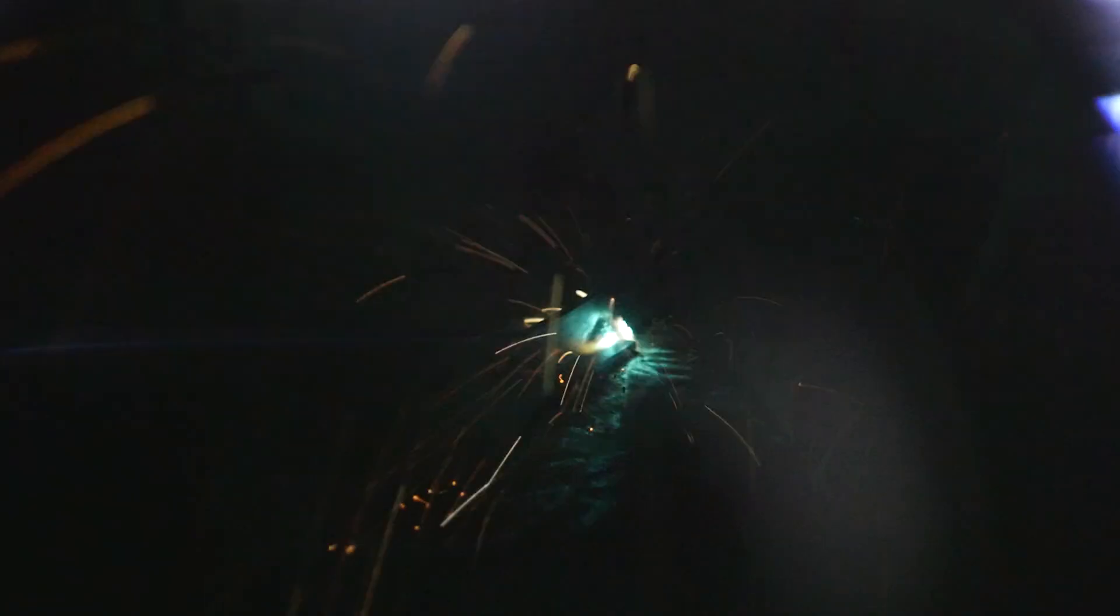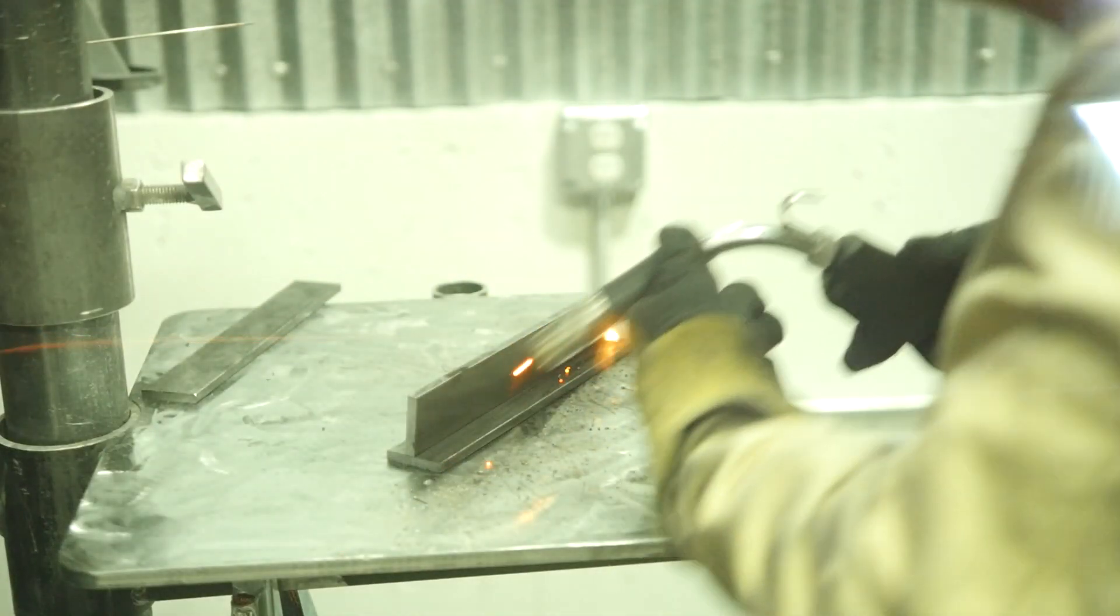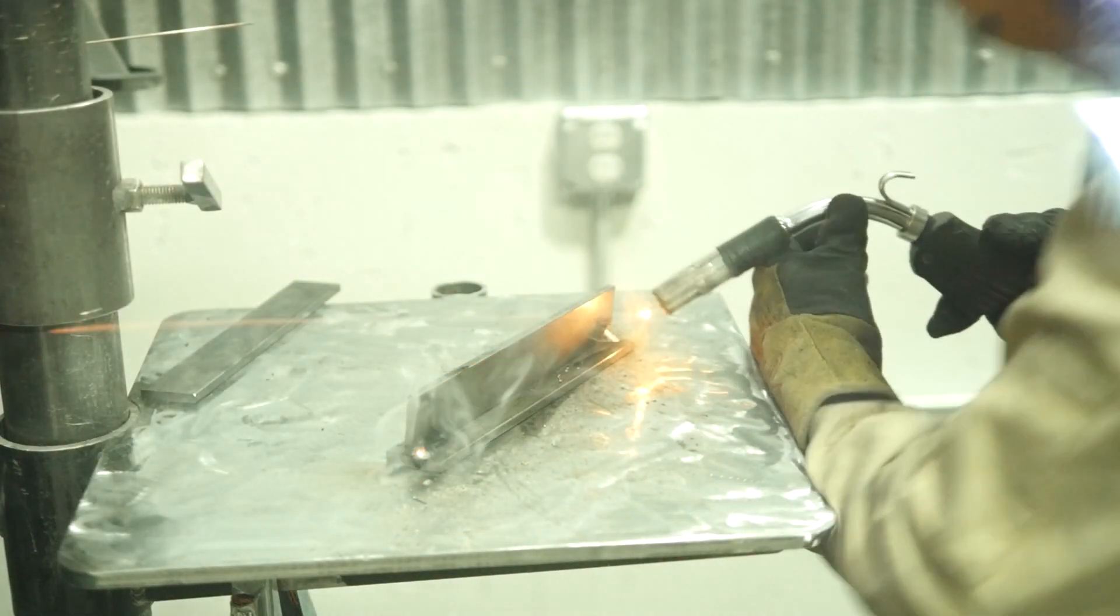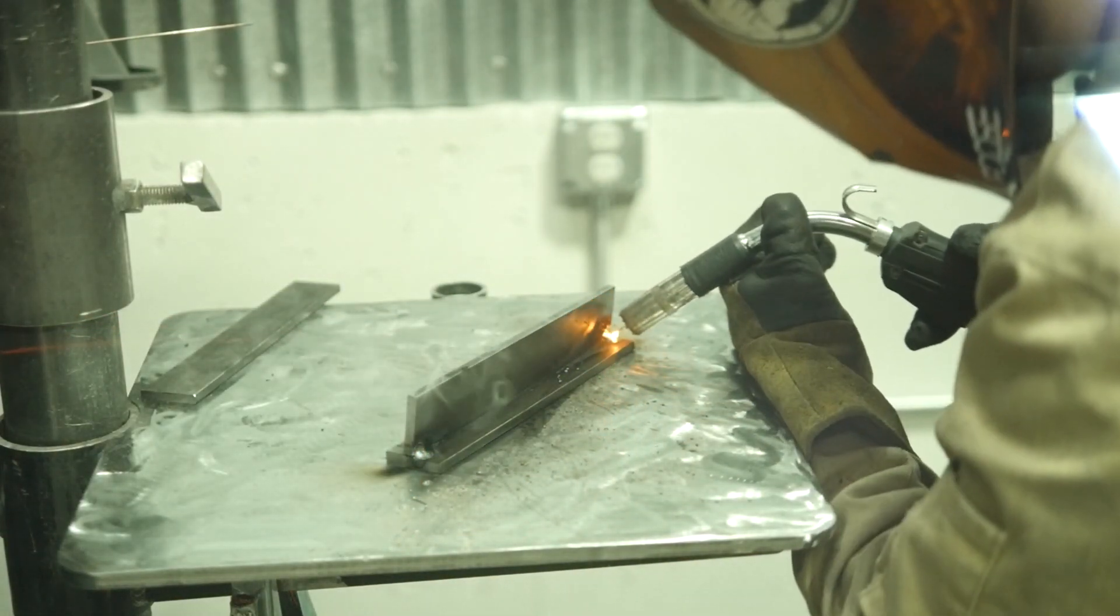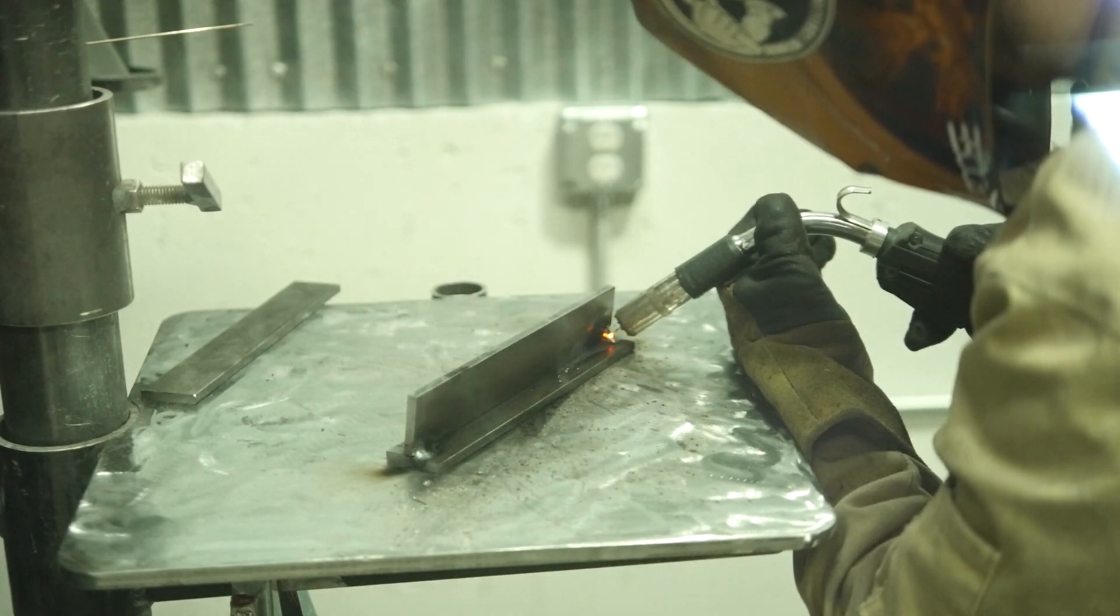Alright, our last mode of transfer that we're going to be looking at is spray transfer. Now this is the granddaddy of them all. It's the highest thermal output or the hottest mode of transfer and it's very, very smooth, should have virtually no spatter. We're going to be at 600 inches per minute at 30 volts, but the big difference is now we're using a 90% argon, 10% carbon dioxide. That's going to get us into a nice hot spray transfer for a quarter inch plate.